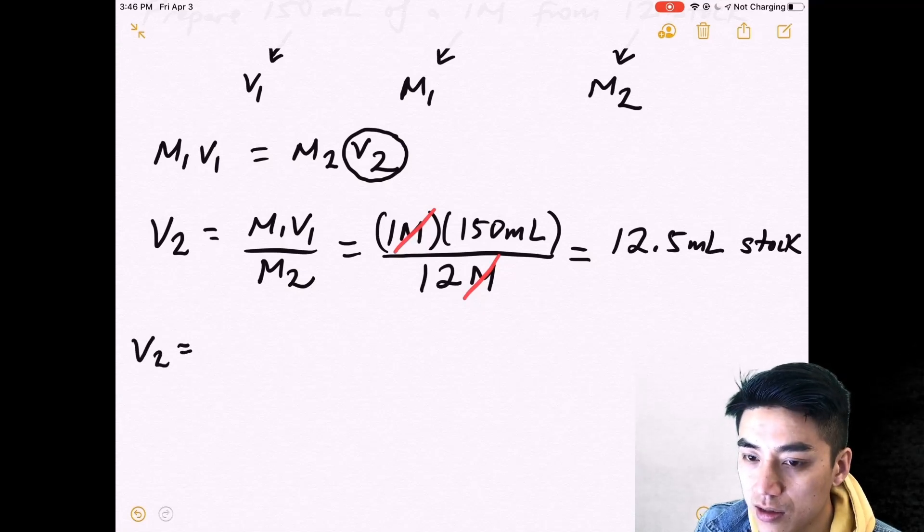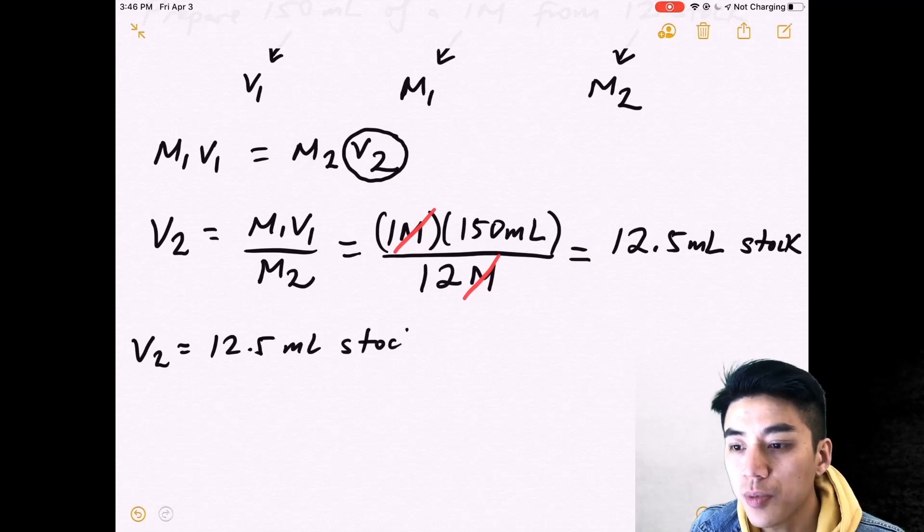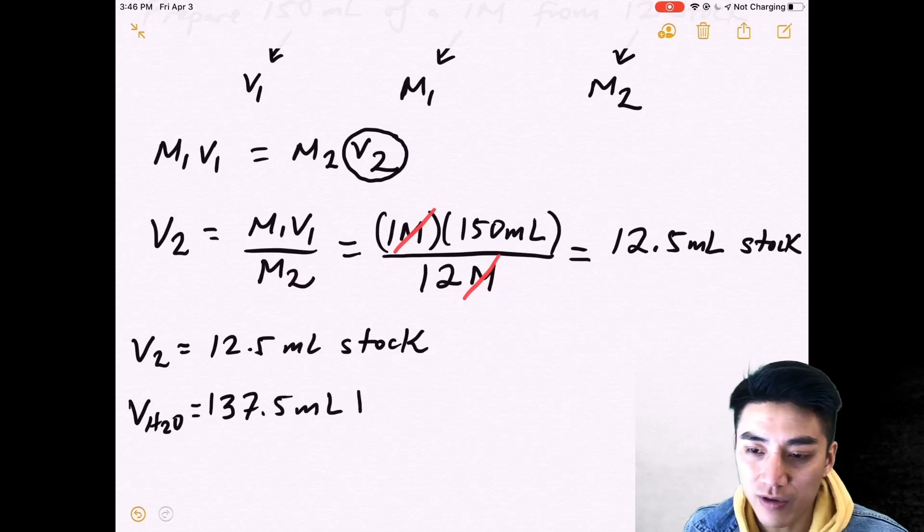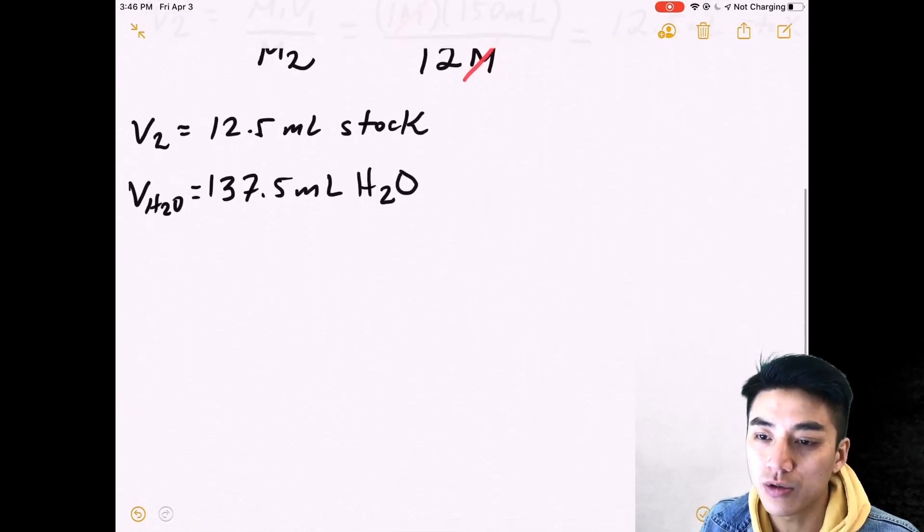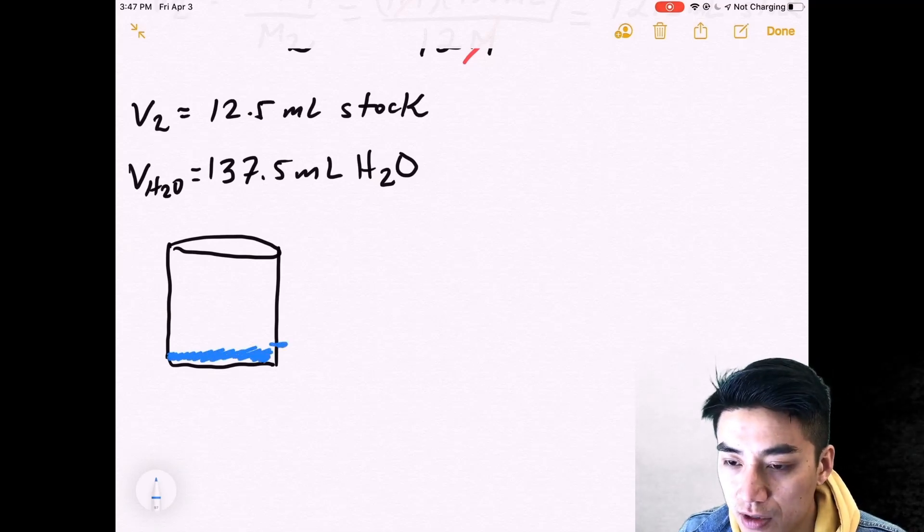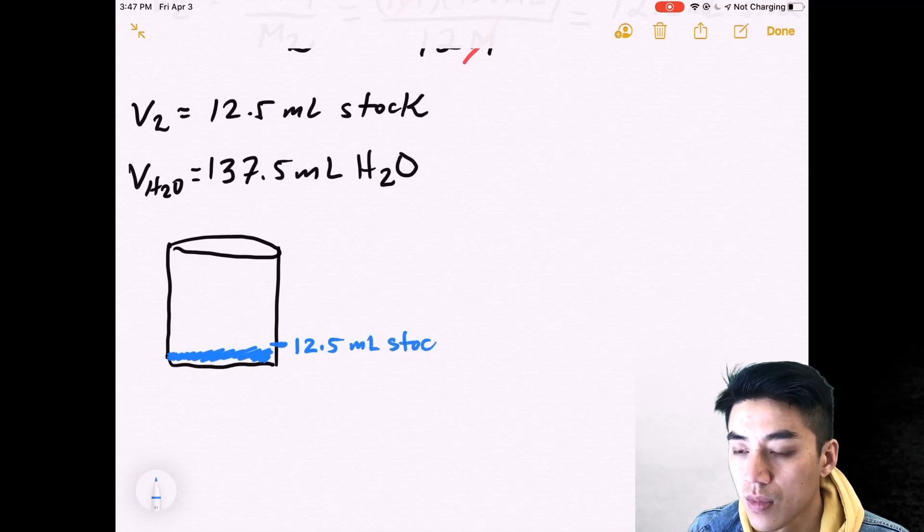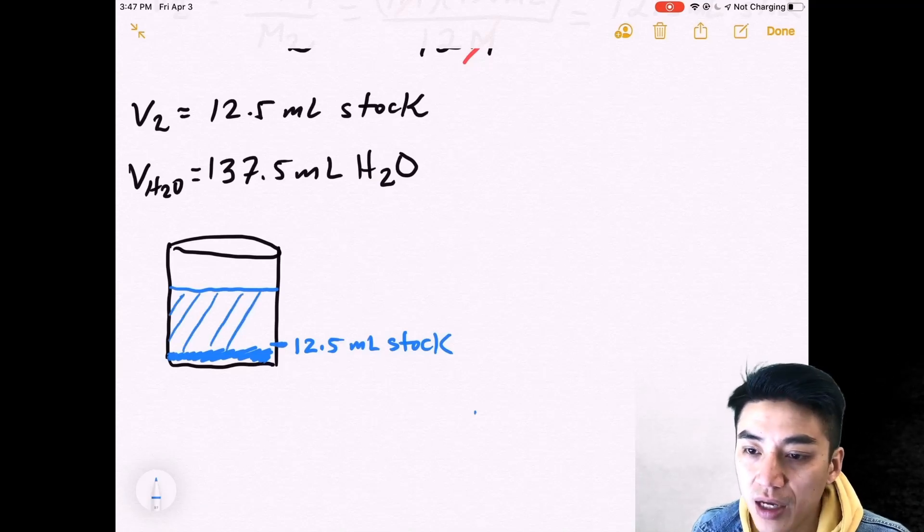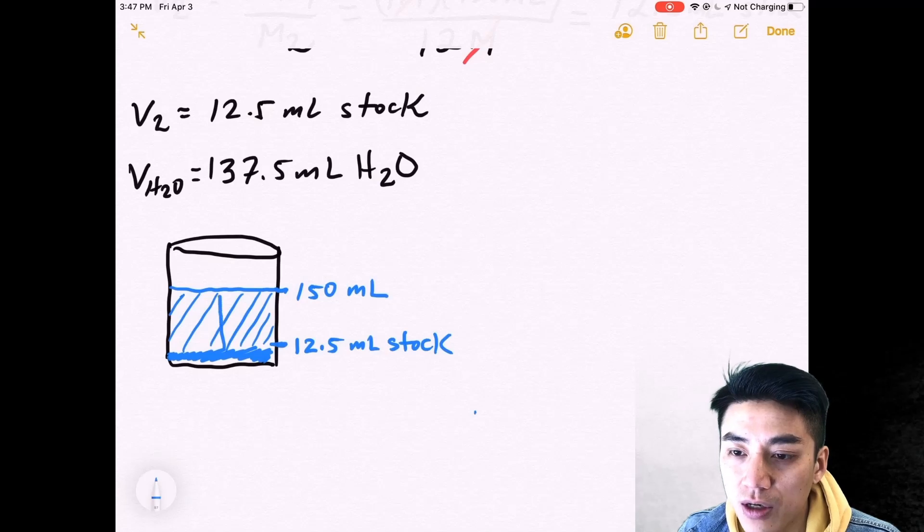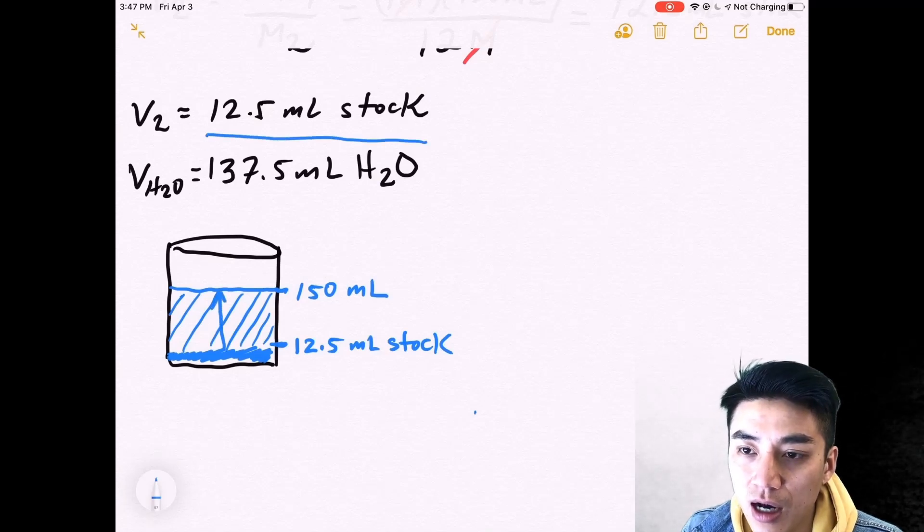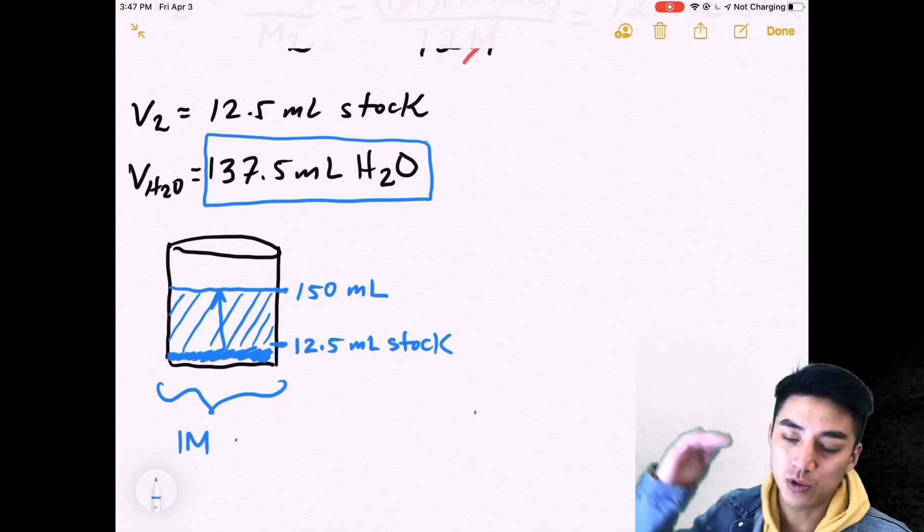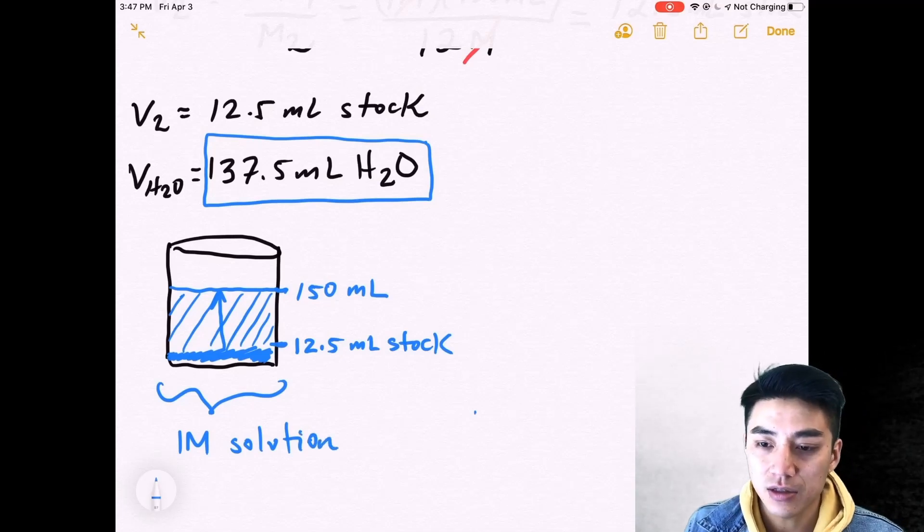That's how much of the original solution you need to use. Typically V2 represents the amount of stock. There's really two parts to each of these problems: how much stock you need and then how much water. Obviously the water has to be 137.5 because you were asked to produce a 150 milliliter solution. I'll draw a picture so you can see what it looks like again. The first 12 and a half is your stock, that's your original highly concentrated solution. And the remainder has to be water because you want to water down, you want to dilute your solution. So you fill it back up to the 150 mark, which means the remainder had to be 137.5 milliliters of water. And when you do that, your new solution is now 1 molar. You went from 12 molars originally down to 1 molar. That's the new solution that you're asked to prepare.